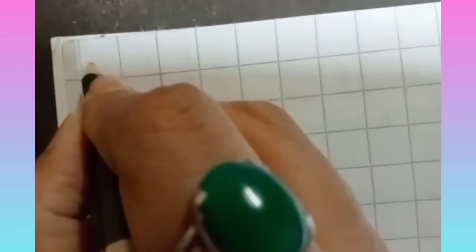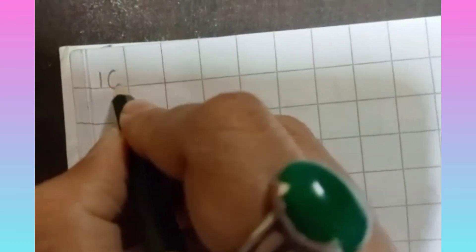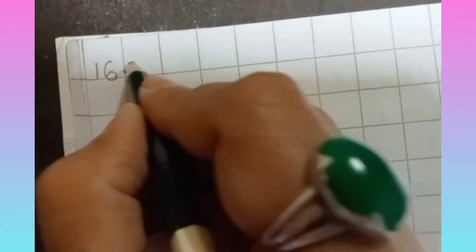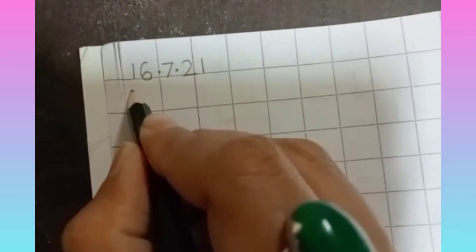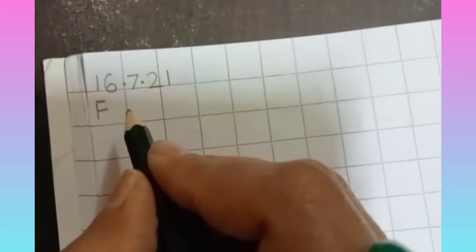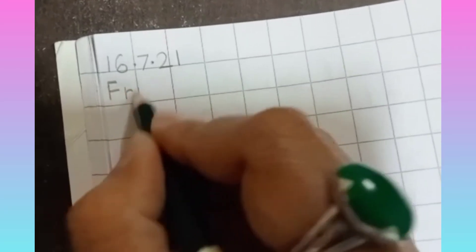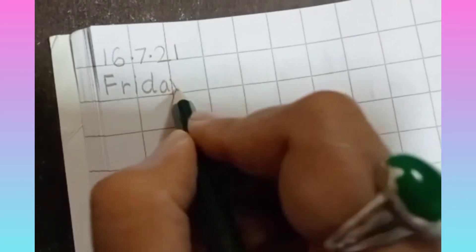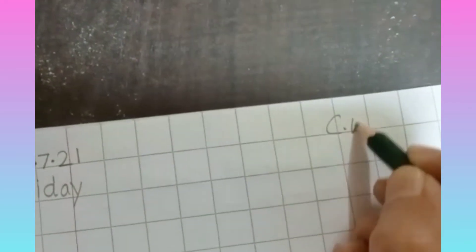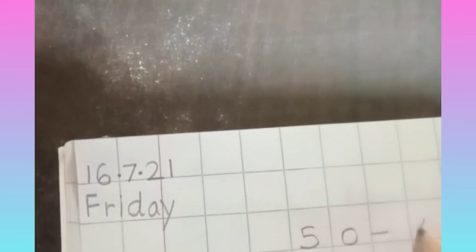So for that, open your maths notebook and write today's date, 16.7.21. And today's day is Friday. Classwork. And today we will write backward counting from 50 to 41.